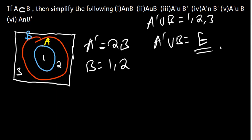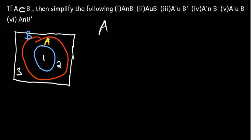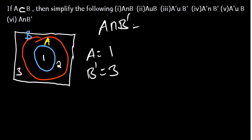We have the last question, Part 6, which is A intersection B complement. Our A is 1. Our B complement is 3, because 1 and 2 are found in B, so we are excluding them. The numbers which are found both in A and B complement — there are none. So, A intersection B complement is just basically the empty set. This is how you work out problems involving the subset. If A is a subset of B, just know that A is found in B.